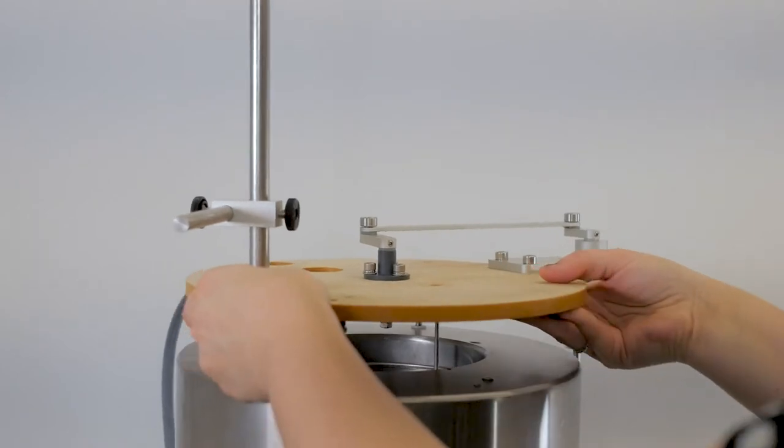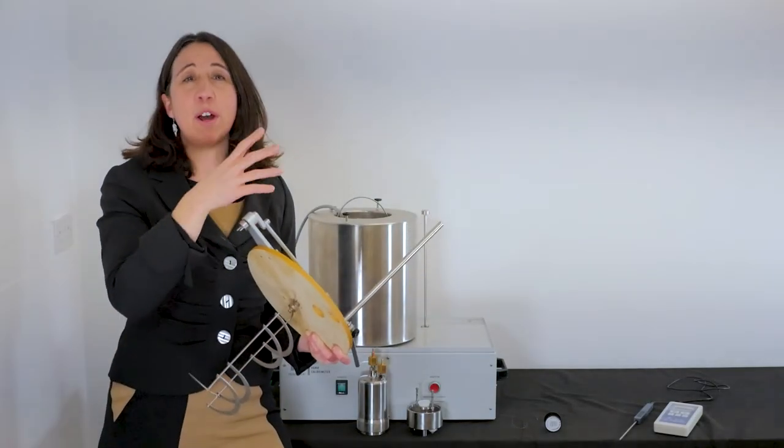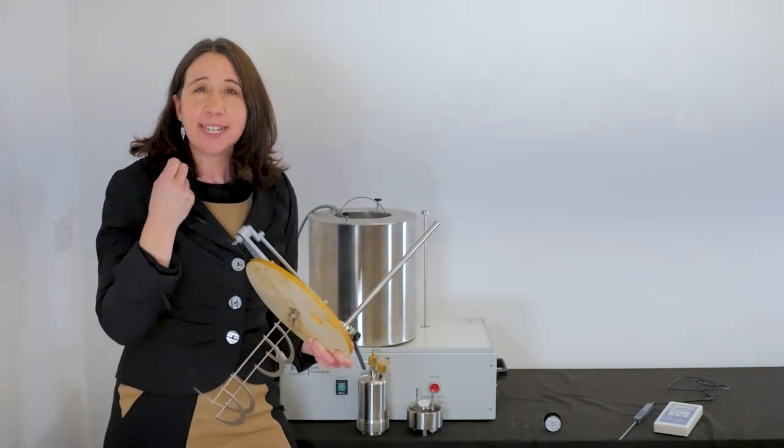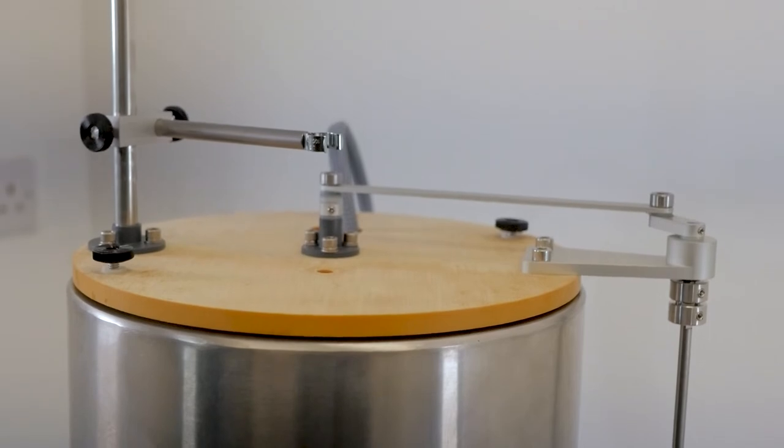The stirrer mixes the water within the bomb vessel to balance the temperature throughout to avoid hot and cold spots for a stable accurate spot measurement of temperature that is calculated into calorific value.